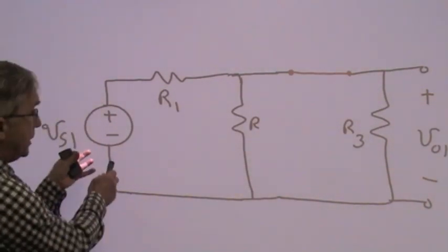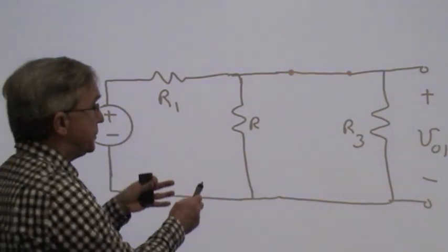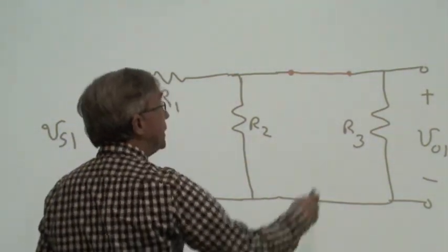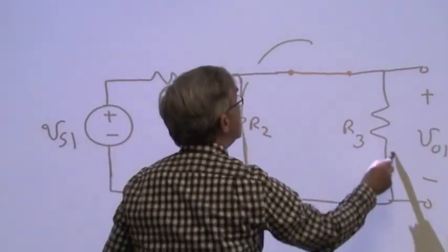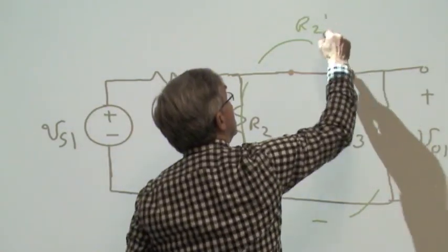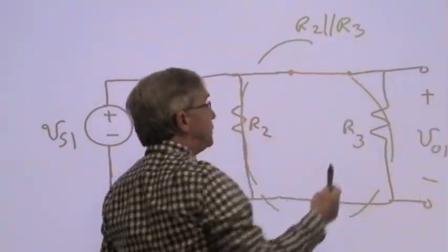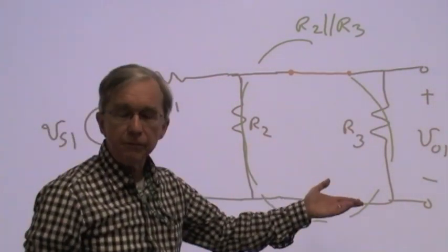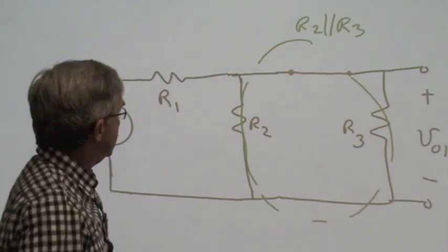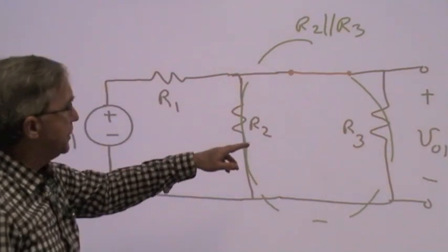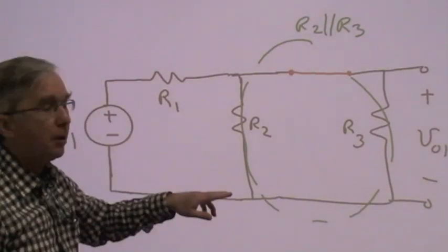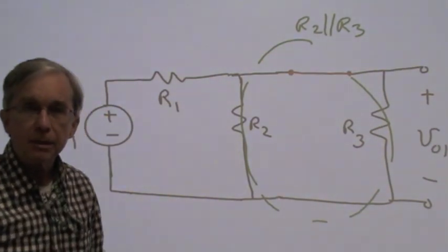And now we see that we have a voltage source, a resistor network. We can say that R2 and R3 are in parallel, so that by voltage division, Vout1, the contribution to Vout from Vs1, is equal to Vs1 times the parallel combination of R2 and R3, divided by R1 plus that parallel contribution.